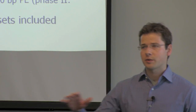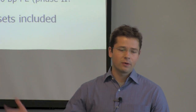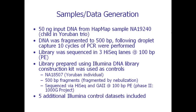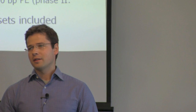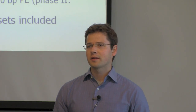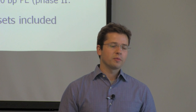As a control, so that we have something to evaluate the performance relative to, I downloaded a whole variety of data sets. All of these were prepared using Illumina DNA library construction kits. The one that I really focused on is also a Yorubin individual from the HapMap trio, done to 500 base pair fragmentation and sequenced using the same parameters — 100 base pair paired-end reads — as part of the Phase 2 Thousand Genomes Project. I also downloaded five additional Illumina control data sets, though I couldn't analyze all of these in as much detail simply because there's over 100 gigabases of sequencing data.